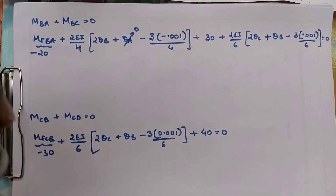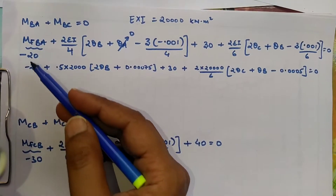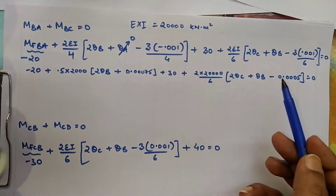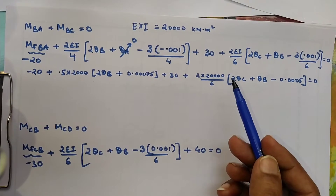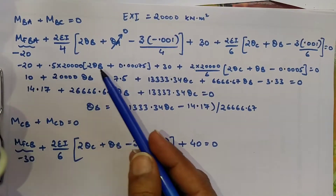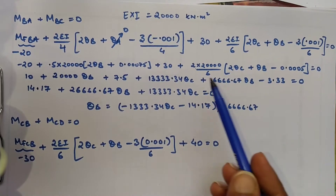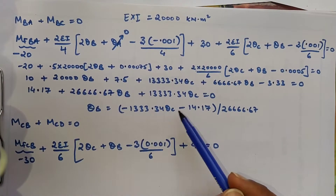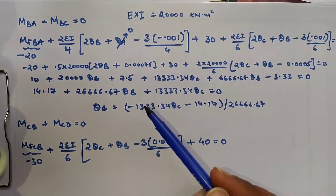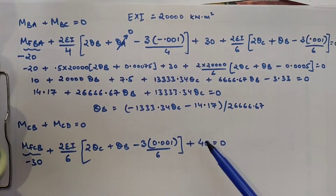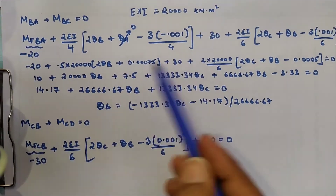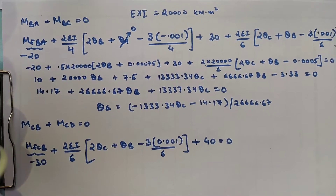For CD, the fixed end moment is positive 40. We substitute and solve, inserting the value of EI to find the values. We then further solve to find the value of θB in terms of θC so that we can substitute it. After doing this, we substitute the value of θB into the equation given below.